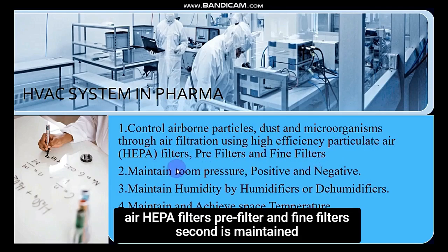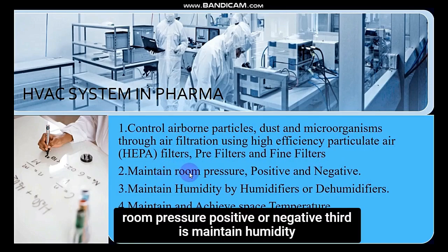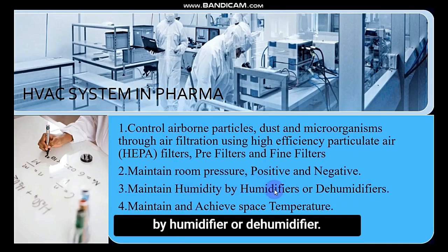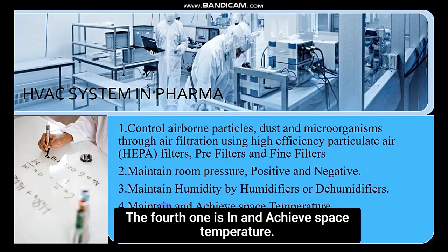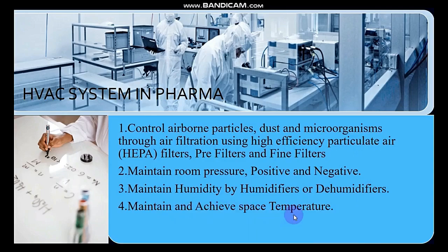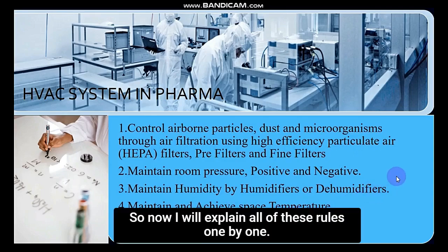Second is to maintain room pressure — positive or negative. Third is to maintain humidity by humidifier or dehumidifier. The fourth is to maintain and achieve the space temperature. Now I will explain all of these rules one by one.